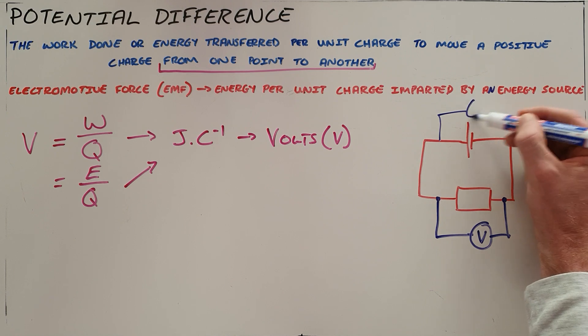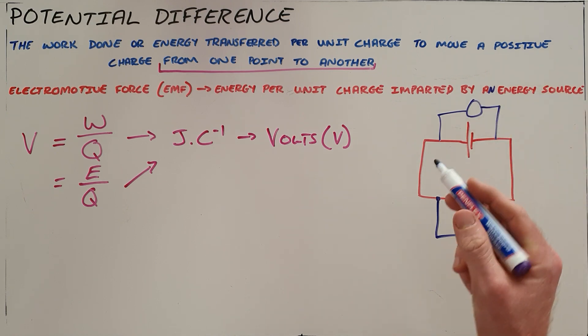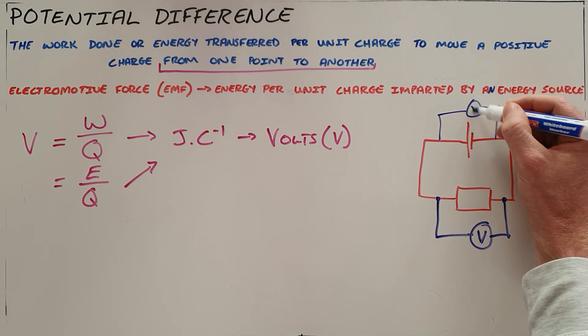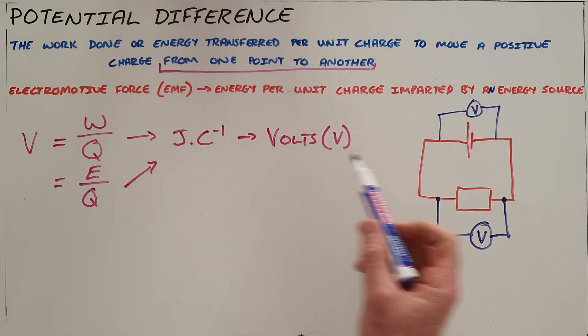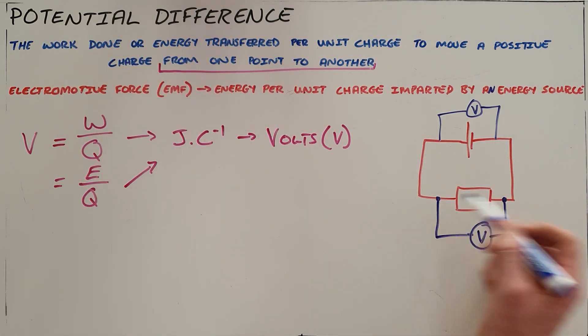So the EMF that is measured across a battery would also be its potential difference, but EMF refers specifically to energy provided by energy sources, where potential difference refers to the amount of energy that is used per coulomb of charge to move a charge through any part of a circuit.